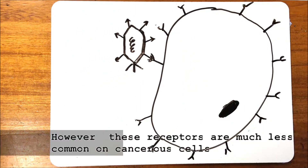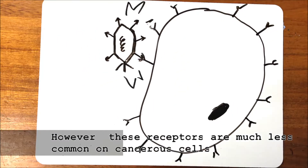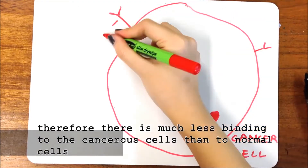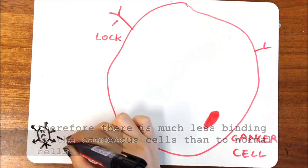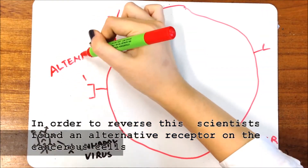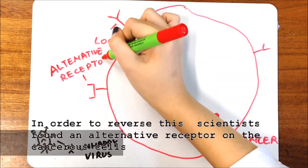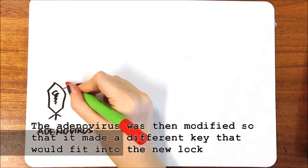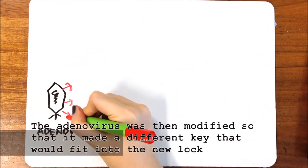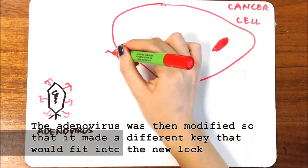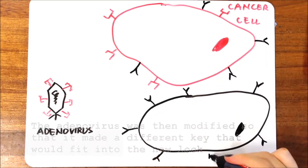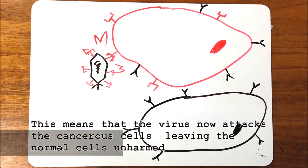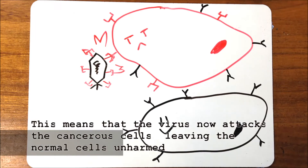However, these receptors are much less common on cancerous cells, therefore there is much less binding to the cancerous cells than to the normal cells. In order to reverse this, scientists found an alternative receptor on the cancerous cells. The adenovirus was then modified so that it made a different key that would fit into the new lock, meaning the virus now attacks the cancerous cells, leaving the normal cells unharmed.